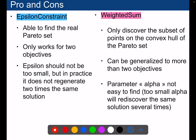To summarize the advantages and disadvantages of the two approaches: the epsilon constraint is able to find the real Pareto set, while the weighted sum is only able to find the points on the convex hull of the Pareto set. The epsilon constraint only works for two objectives, which is a limitation, while the weighted sum can be generalized to more than two objectives. A problem with the epsilon constraint is that you need to find the correct epsilon — it shouldn't be too small, otherwise you might generate the same solution twice. Similarly, for the weighted sum it's not easy to find the right parameter for alpha: if you move alpha too slowly, you may rediscover the same solution several times, which is also a source of inefficiency.